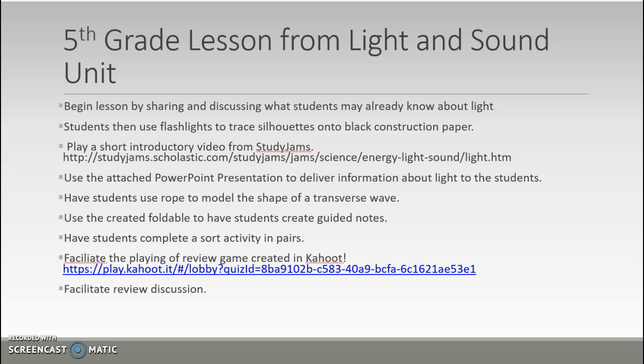Directions for the lesson: You will begin by sharing and discussing what students may already know about light in a KWL-type activity. You could use small sticky notes for students to note what they know and wonder about. Students would then use flashlights to trace silhouettes onto black construction paper, experimenting with shadow size. The silhouettes can be saved for a separate language arts activity.